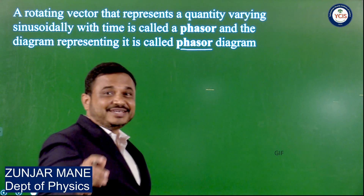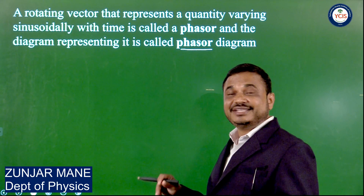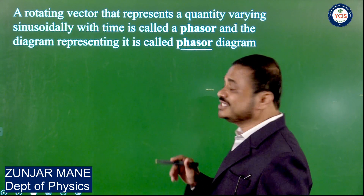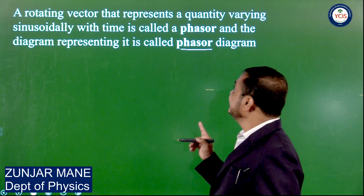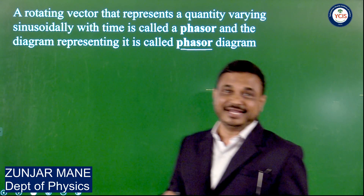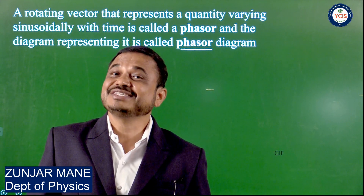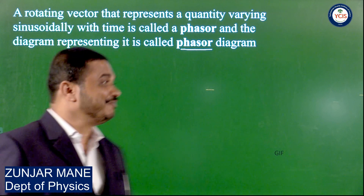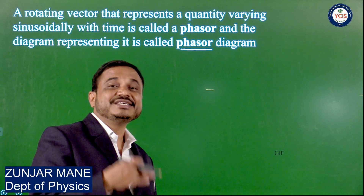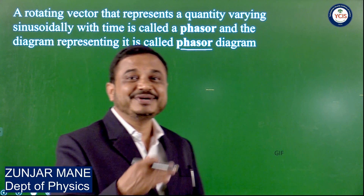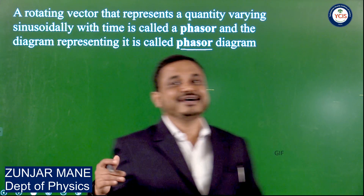So what is the phasor? Phasors are a rotating vector — a rotating vector that represents the quantity varying sinusoidally with time is called a phasor, and the diagram representing it is called a phasor diagram. The rotating vectors which represent the sinusoidally varying AC values of current and voltage are called phasors.